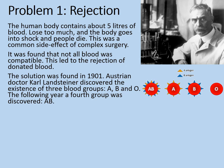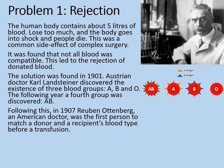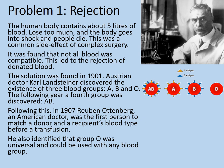The following year a fourth group was discovered: AB. In 1907, Ruben Ottenberg, an American doctor, was the first person to match a donor and a recipient's blood type before a transfusion, making it successful. He also identified that group O was universal and could be used with any blood group.